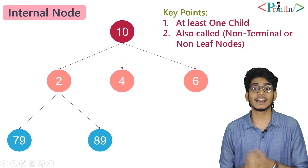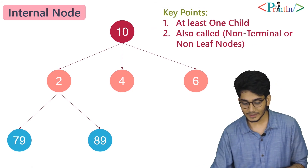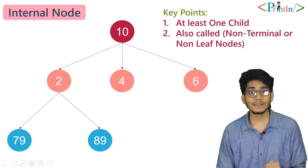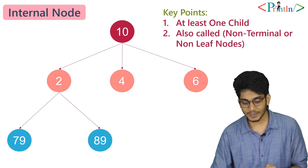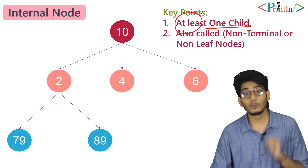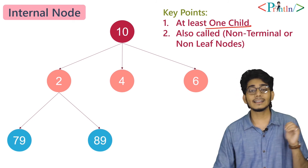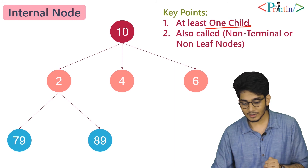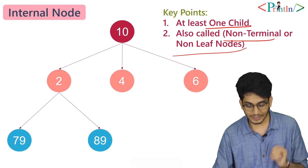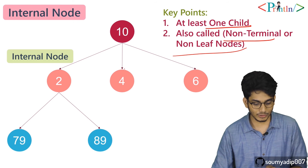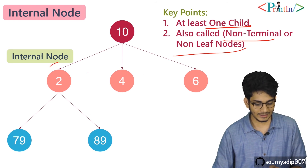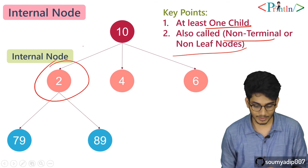Now we'll talk about internal nodes. An internal node must have at least one child. Internal nodes are also called non-terminal or non-leaf nodes. In this tree, node 2 is an internal node.